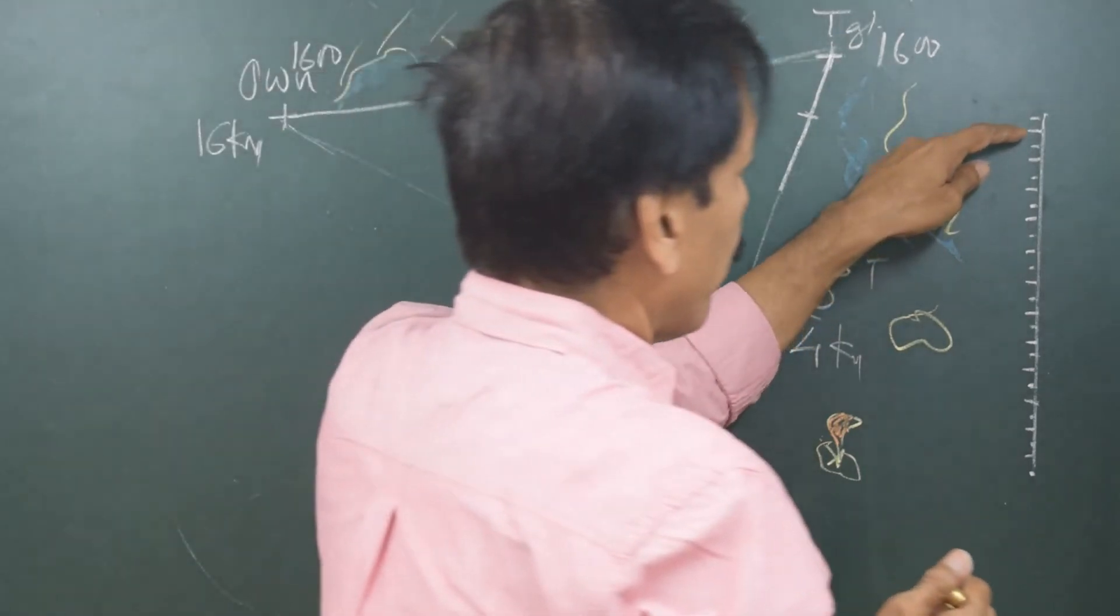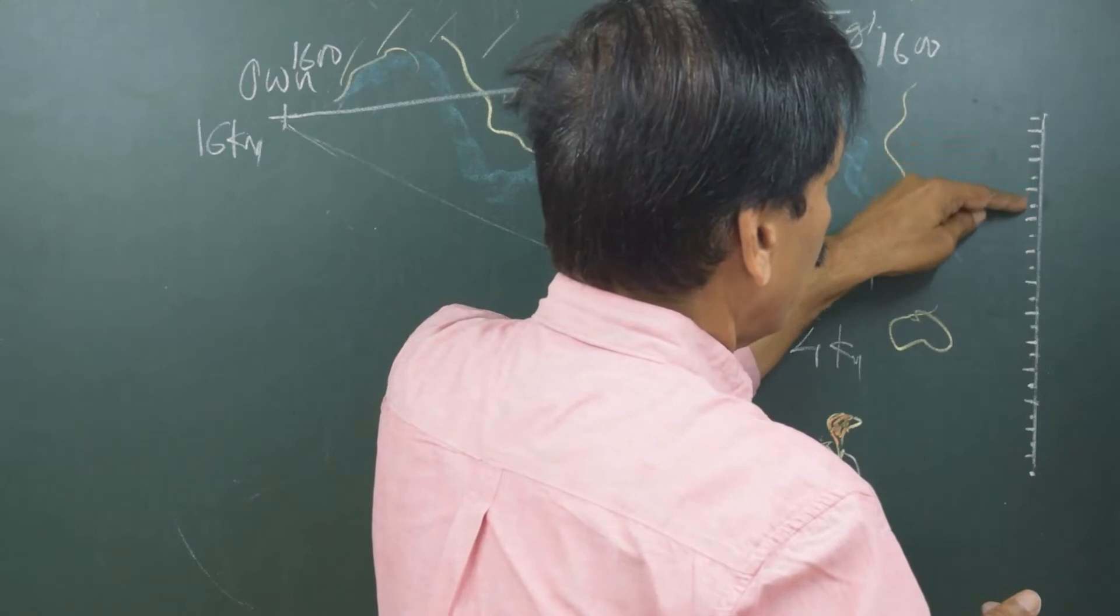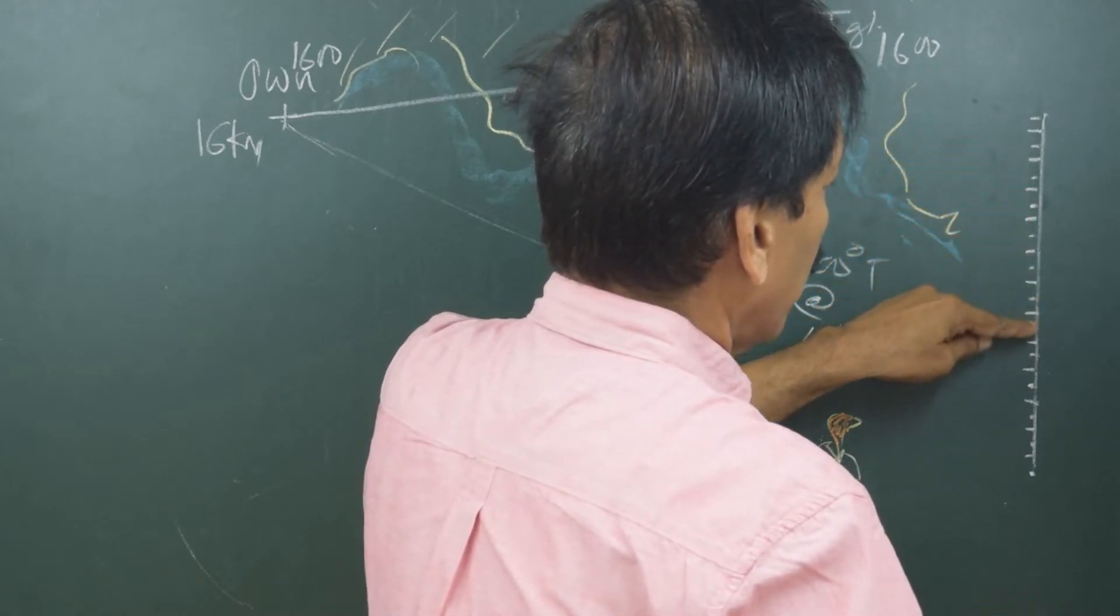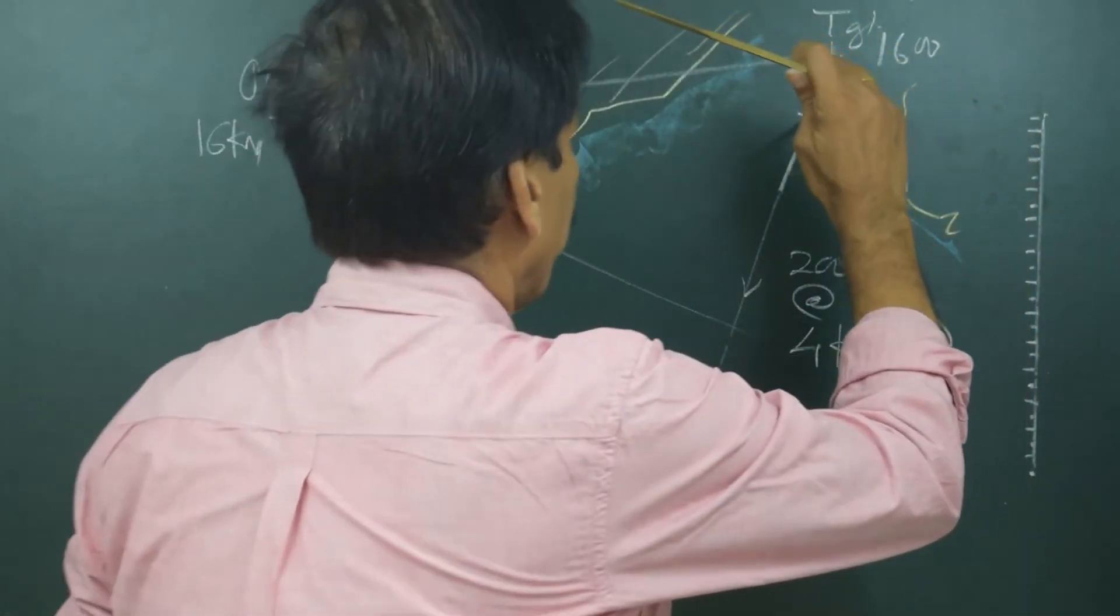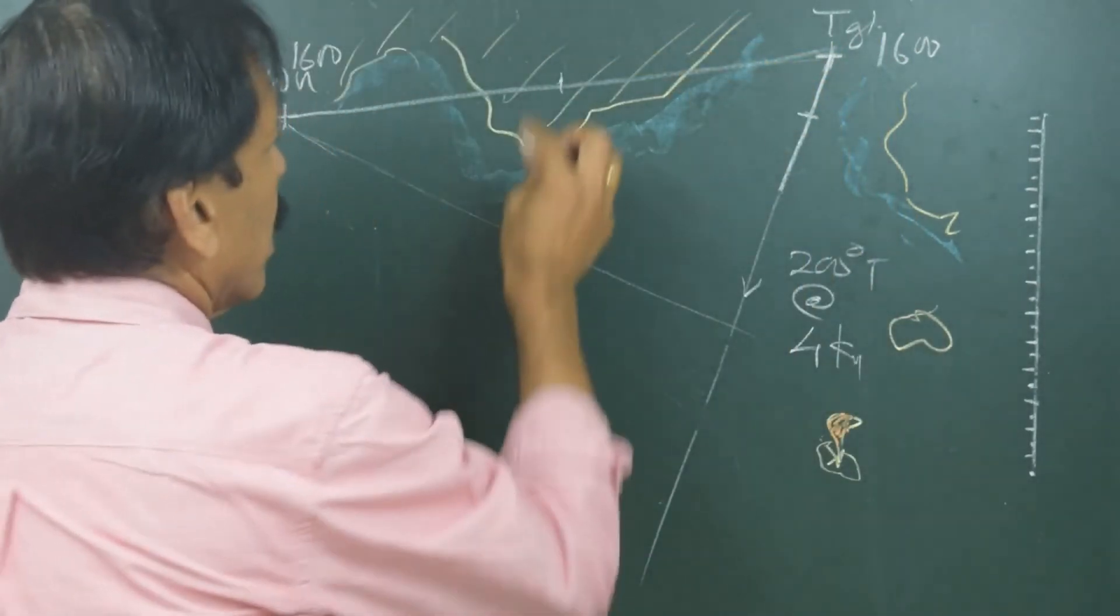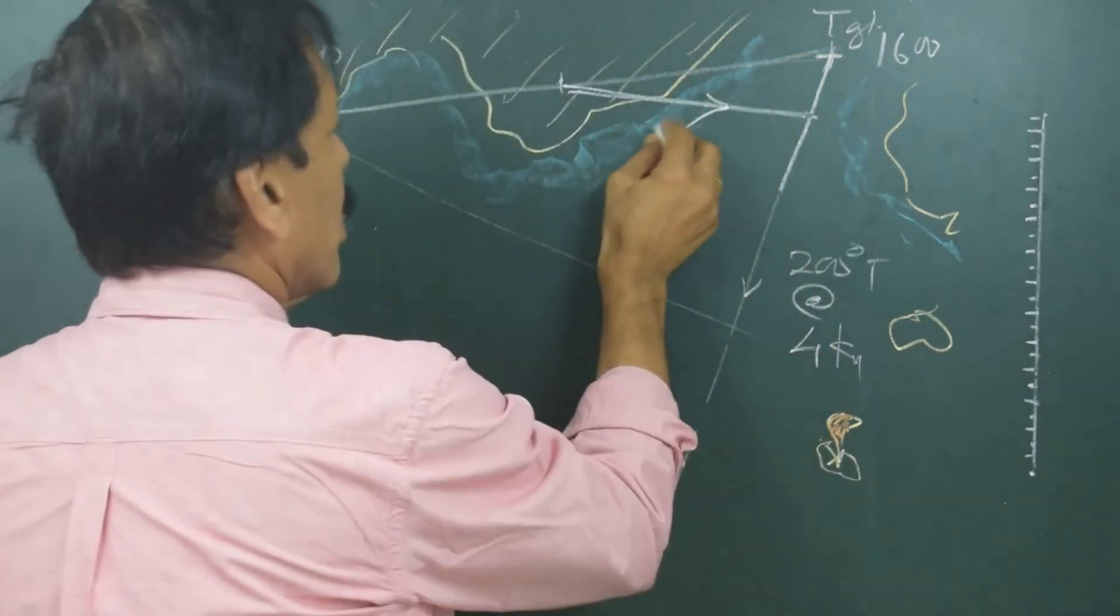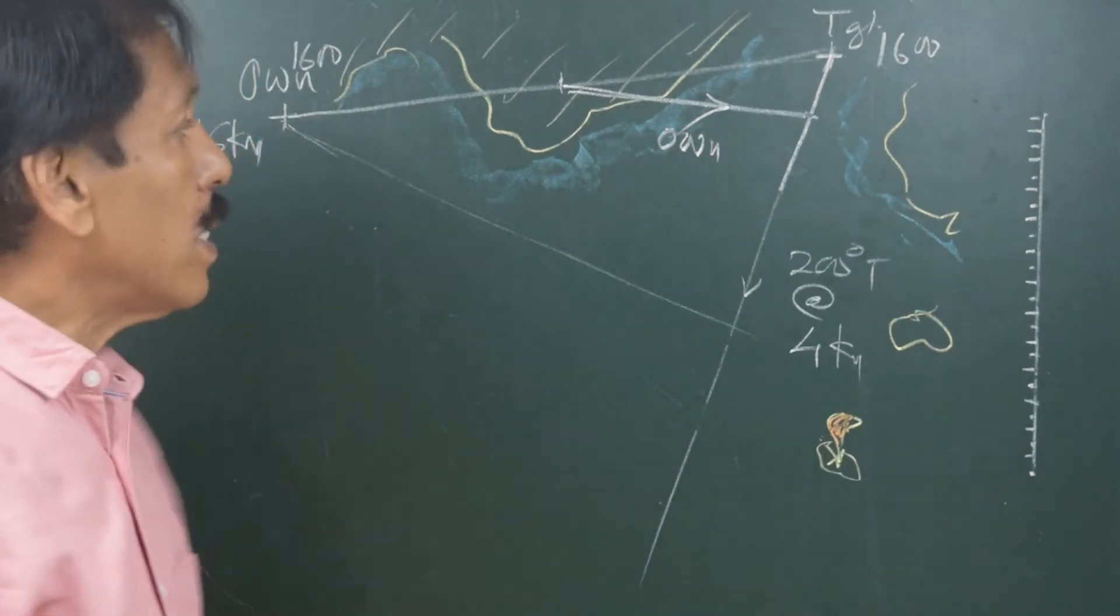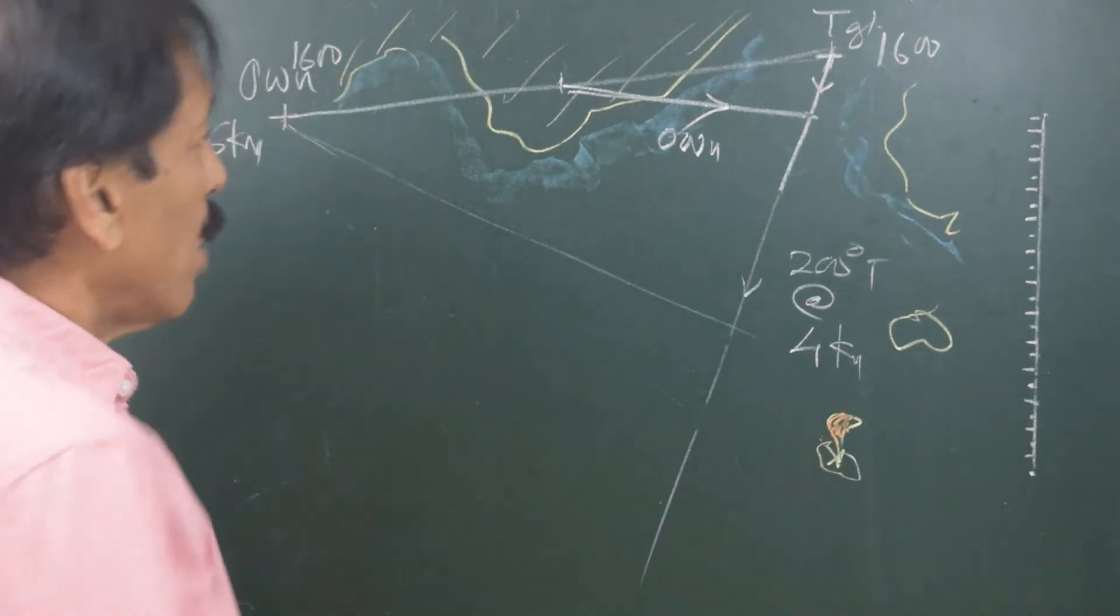So I will take a measure of 16 miles from the scale—1, 2, 3, 4, 5, 6, 7, 8, 9, 10, 11, 12, 13, 14, 15, 16. From this point, I will cut an arc of 16 miles and then join it. This is own ship's distance in 1 hour. This is the target vessel's distance in 1 hour. Once I have got this triangle, then what I will do is parallel to this line, I will draw a line from my present position.